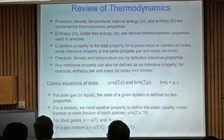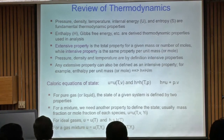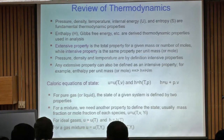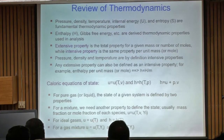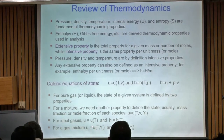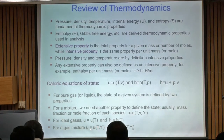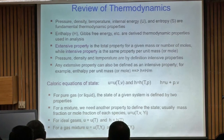For an ideal gas, internal energy and enthalpy are only functions of temperature — they are independent of pressure or specific volume. Enthalpy is defined as H = U + PV. For a total system: total enthalpy = total internal energy + pressure × total volume. This simplification is very important for the analysis.